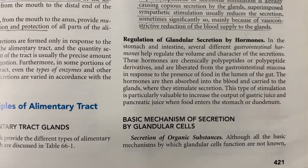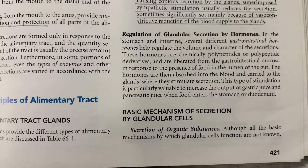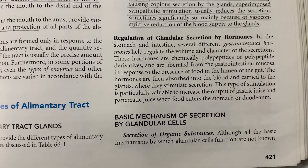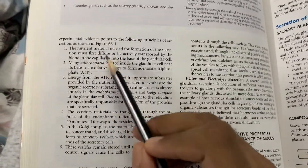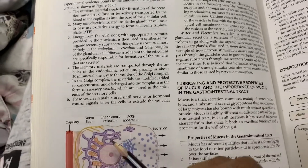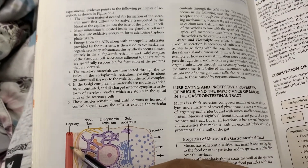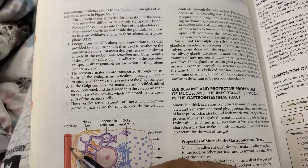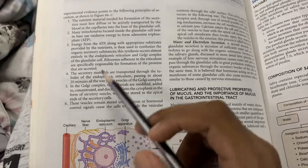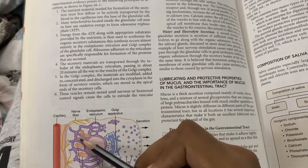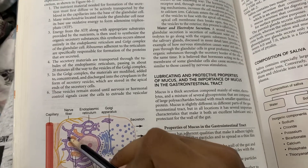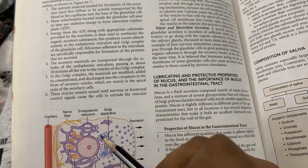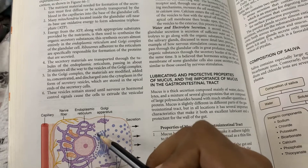Coming to the basic mechanism of secretion by glandular cells: glandular cells secrete organic substances as well as water or serous substance. The nutrient material needed for formation of the secretion must first diffuse or be actively transported from the blood in the capillaries into the base of the glandular cell. Many mitochondria then form ATP via oxidative phosphorylation. This ATP is used along with nutrients to synthesize organic secretory substances. This synthesis occurs in the endoplasmic reticulum and the Golgi apparatus. Ribosomes are responsible for formation of the proteins that are secreted.